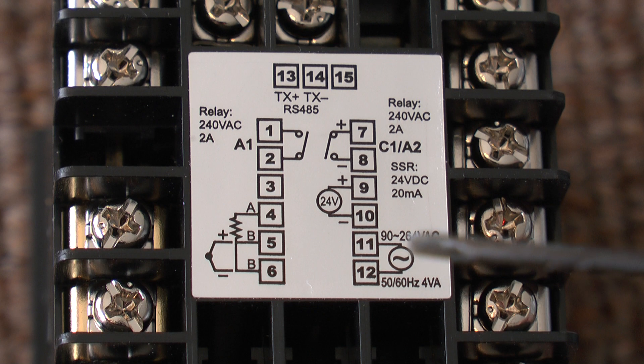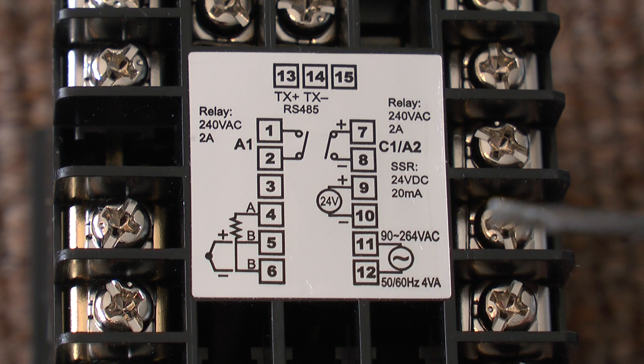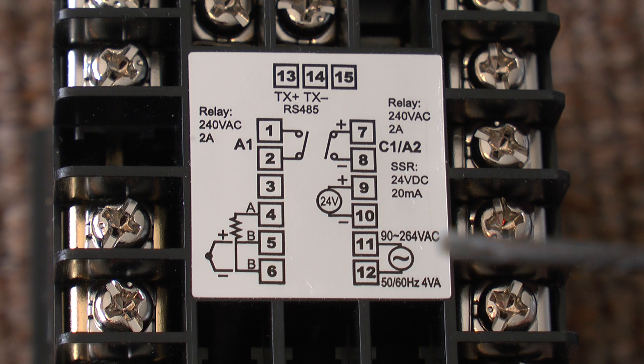Your mains wires go on terminals 11 and 12 as shown here and can be any voltage between 90 and 264 volts AC.